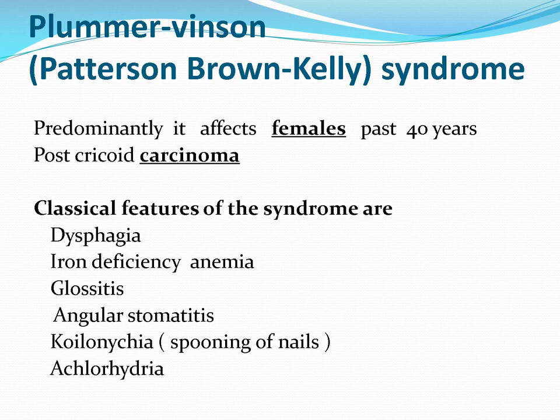Plummer-Vinson syndrome (also called Peterson-Brown-Kelly syndrome) is iron deficiency anemia along with glossitis and dysphagia — a triad of symptoms. It is seen mostly in females above 40 years and is a premalignant condition that can cause post-cricoid carcinoma in females.